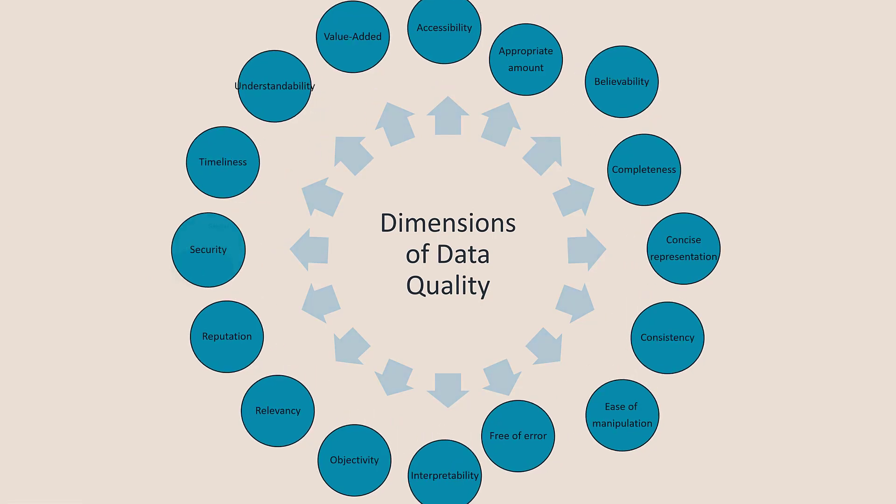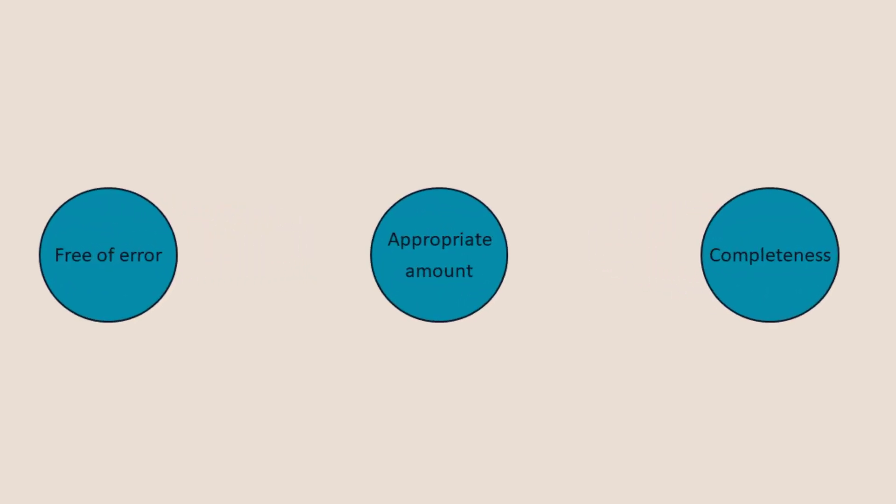Let's look at three of these dimensions. Free of error means the extent to which data is correct and reliable. Let's imagine I'm interested in calculating the average height of my students and I'm 178 centimeters tall. If I open up an Excel sheet and start recording heights, then if I type 17 instead of 178, that's going to show up as a data quality issue because I incorrectly put in 17 centimeters instead of the actual 178 centimeters.